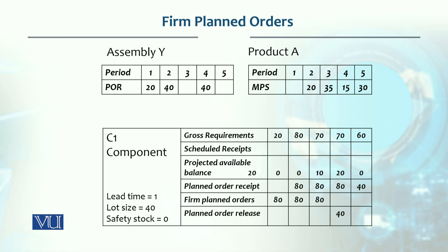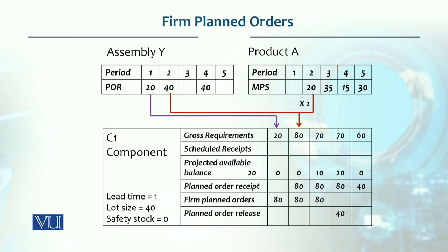The gross requirement we determined from Y and product A: our Y first week was 20, so that's C1. 40Y and 20A — so 20 multiplied by 2 is 40, plus 40, we get 80. C1 only for A gives us 70. Fourth week A, so 70 is 70.